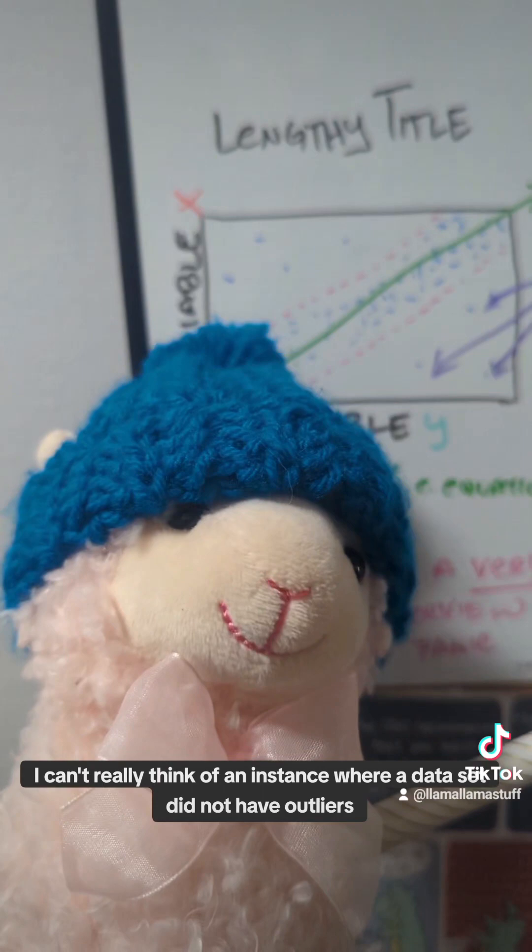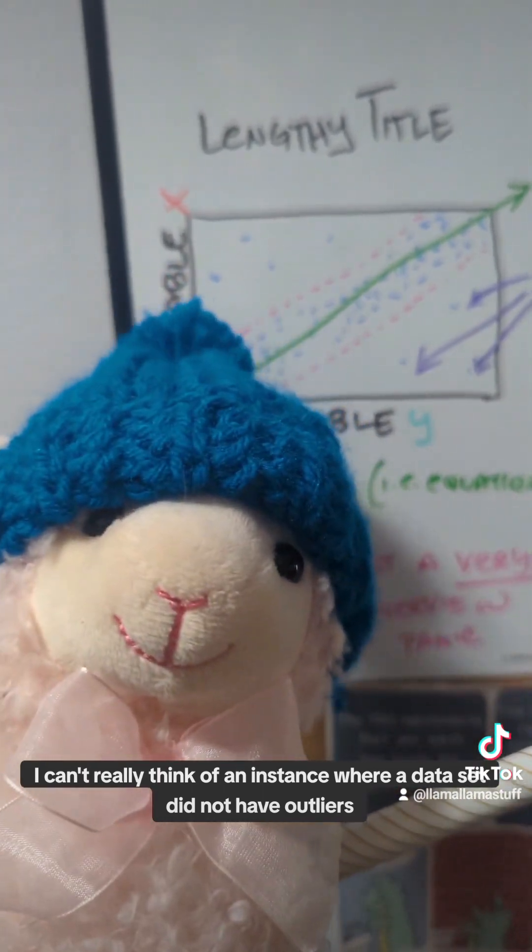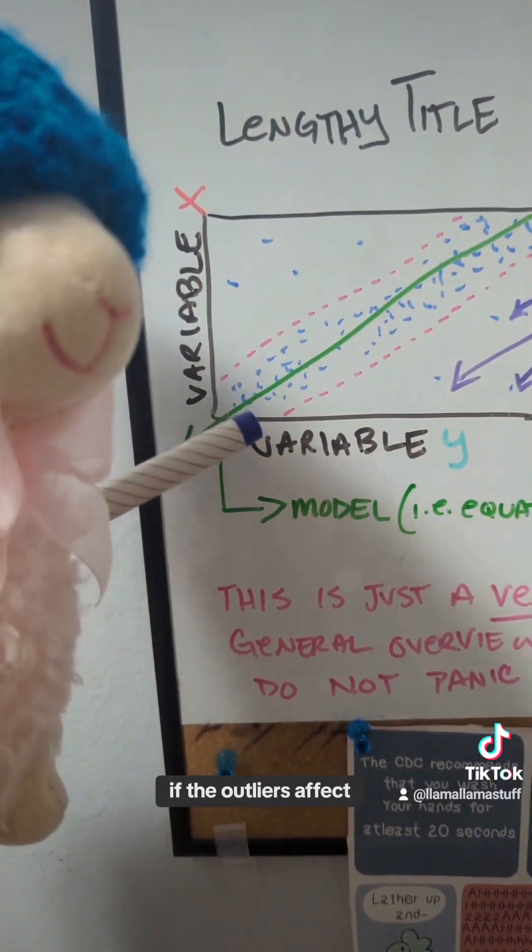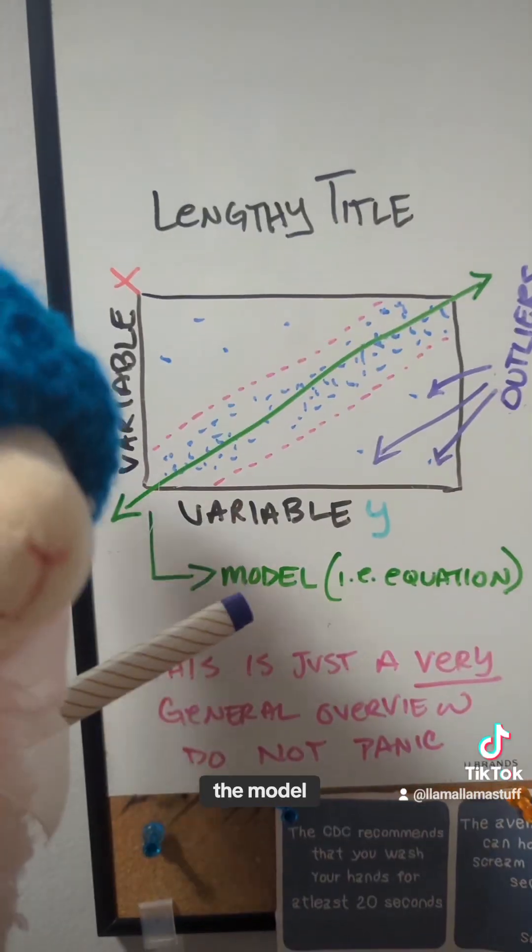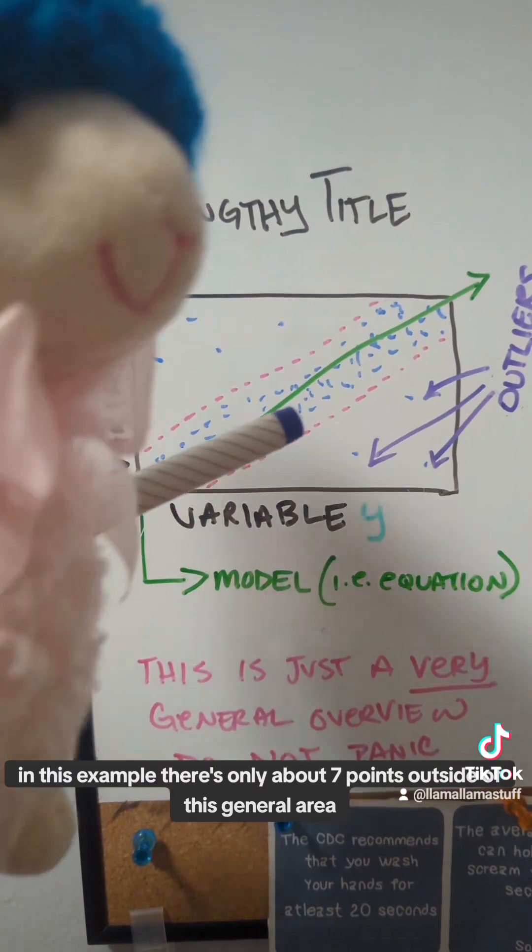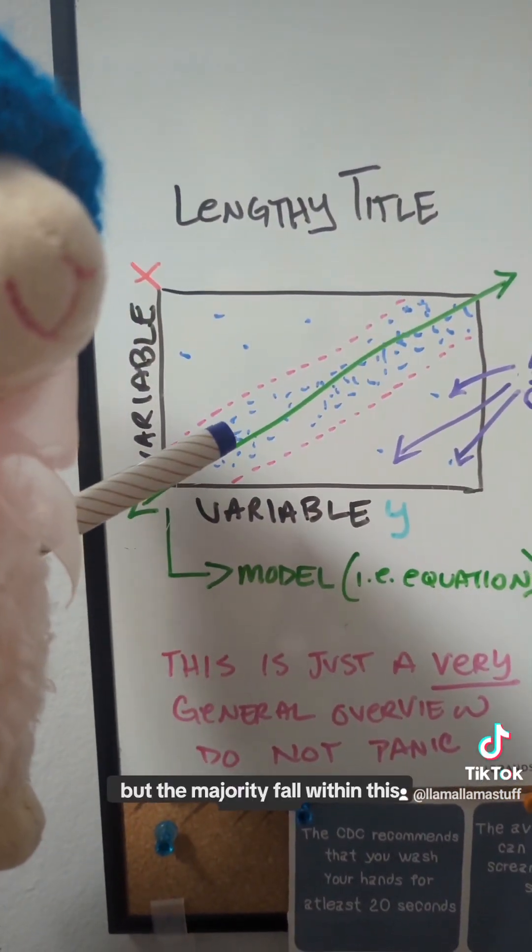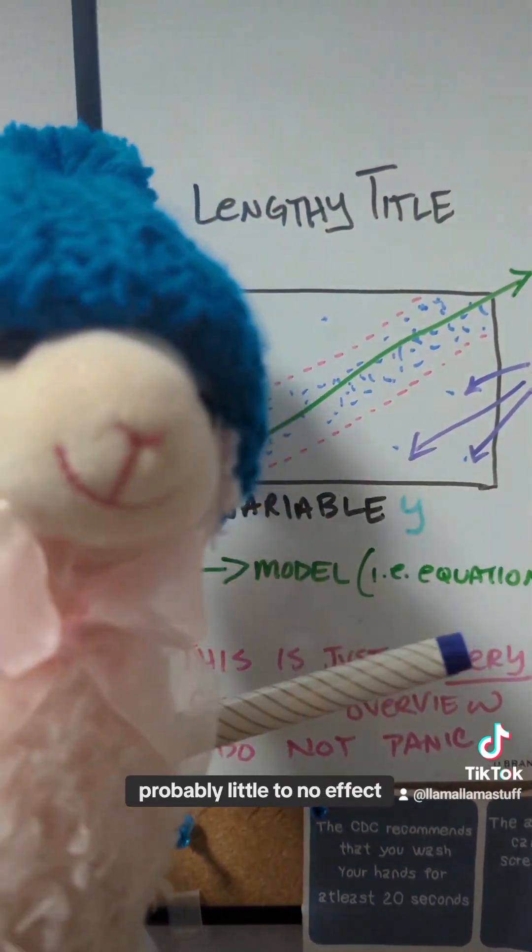I can't really think of an instance where a data set did not have outliers. Part of the process in finding the line of best fit is determining if the outliers affect the model. In this example, there's only about seven points outside of this general area, but the majority fall within this space, so in all likelihood, probably little to no effect.